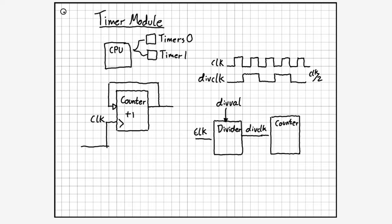With hardware timers, you can also configure a maximum count value, where once the counter reaches that value it wraps around back to zero. This is different from a basic counter that wraps at its maximum bit-width overflow. You can actually set a specific maximum count value. Combined with the configurable clock divider, this greatly increases flexibility — you can divide the clock by a large amount to measure very long periods, or divide very little to get high resolution timing but count for a shorter time.